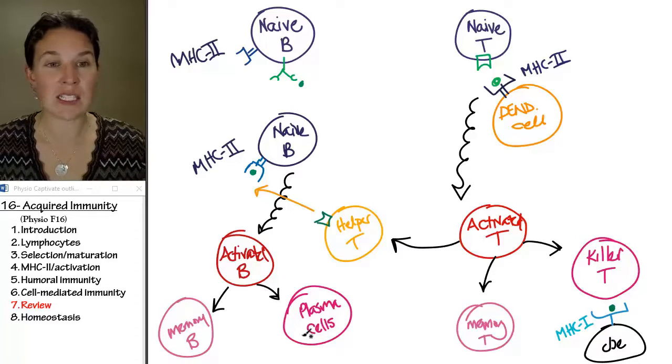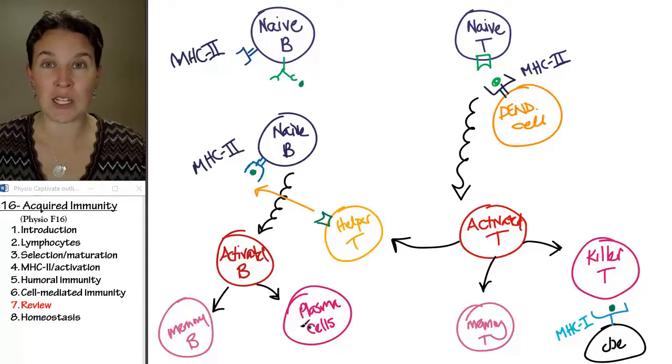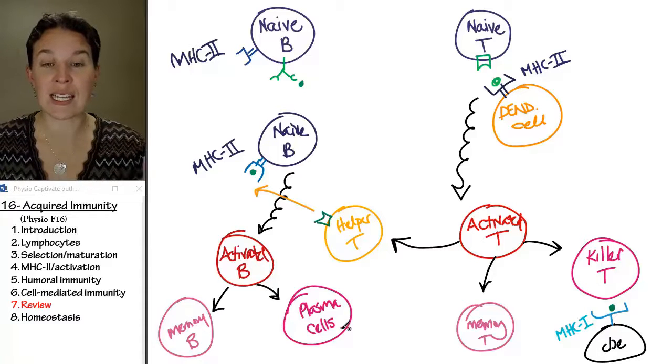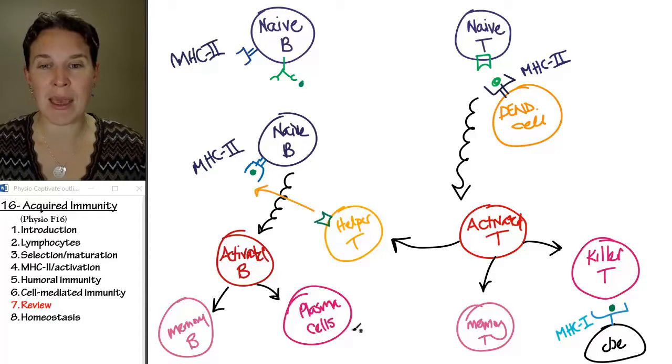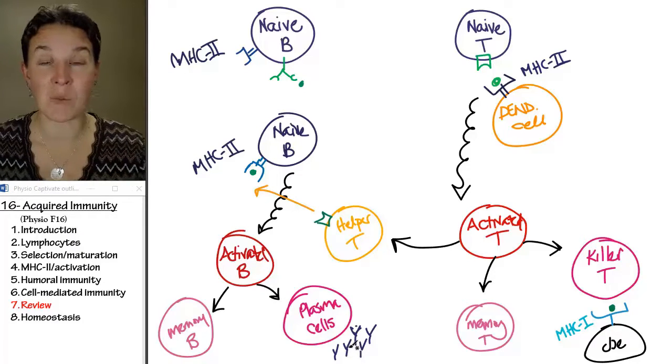Plasma cells experience clonal expansion. They go crazy and start producing mad antibodies against this very specific guy, and so you end up with a huge number of antibodies that are going to bind with that antigen.